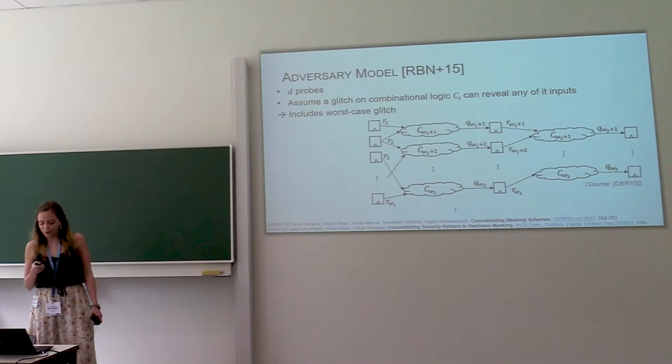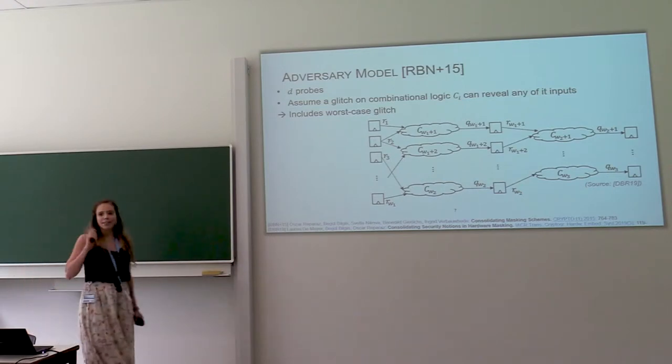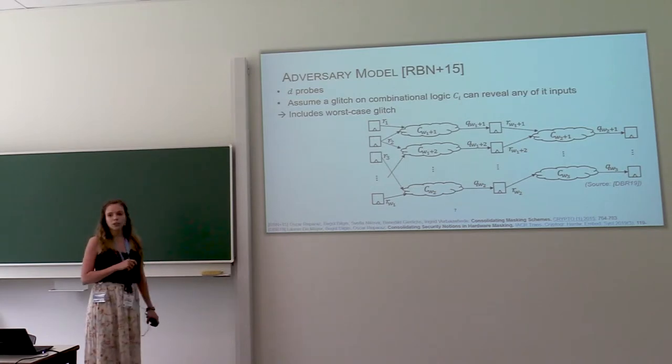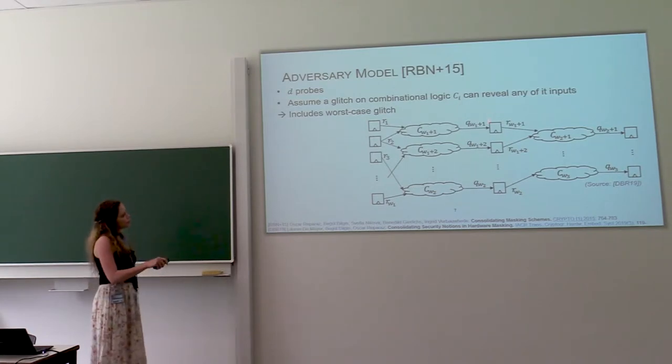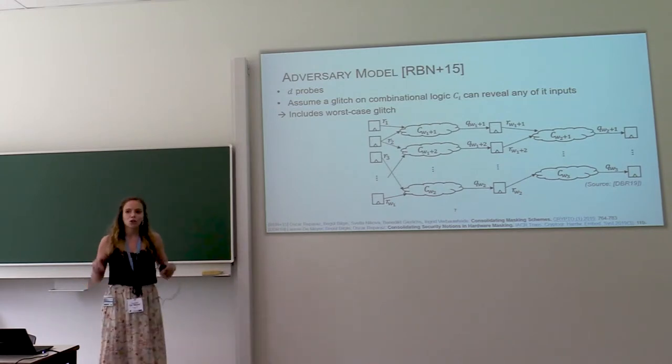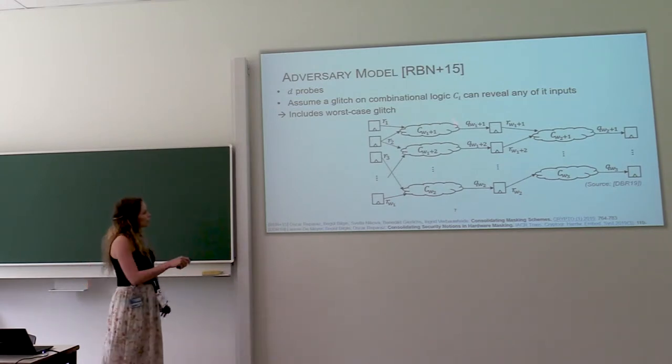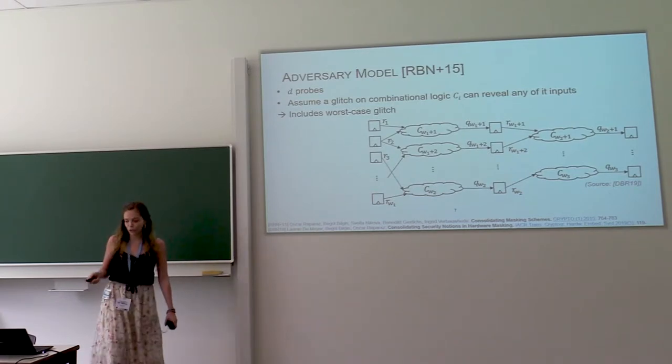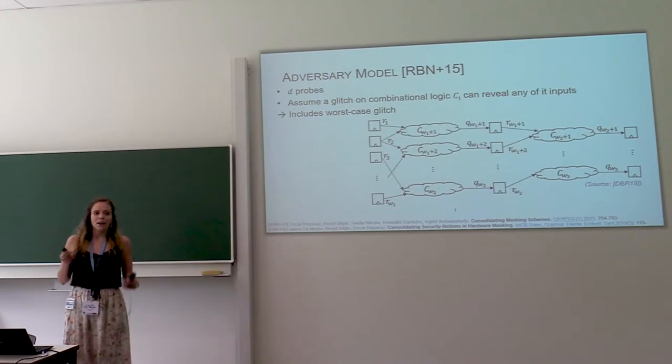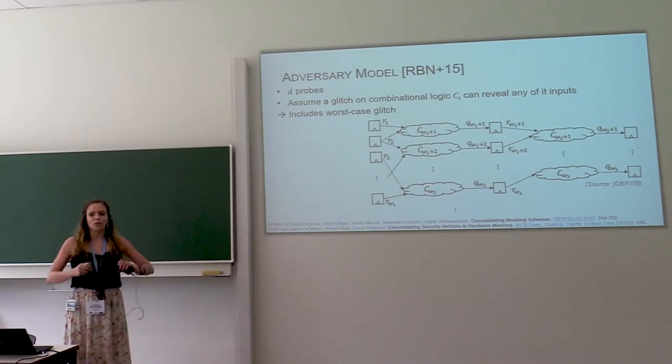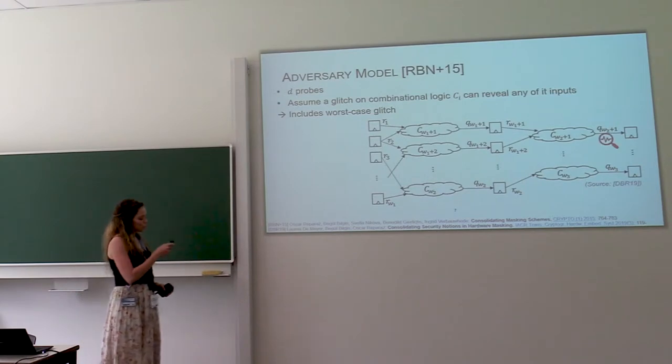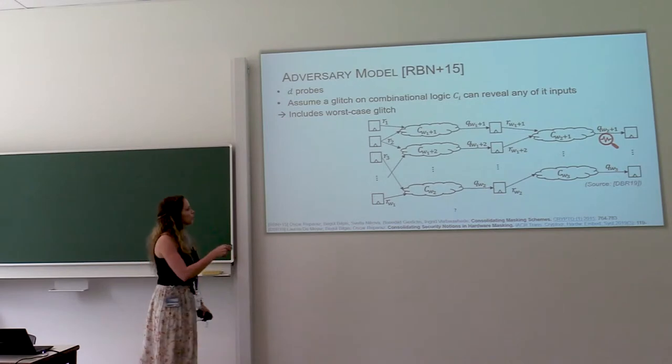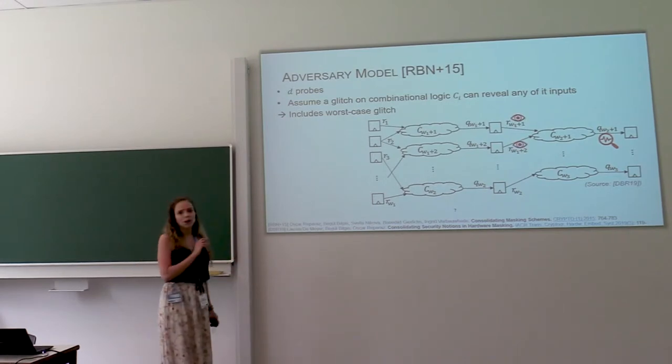So to refer to Frank Beeson's talk, what is our system model? We are looking at a circuit and it consists of combinational logic and sequential logic. And we are assuming that the sequential logic stops the glitches from propagating. So these wires are all stabilized values. And then what is our adversary model? We assume that the adversary can put probes on the circuit. So suppose that he probes this wire.